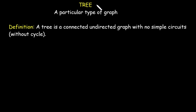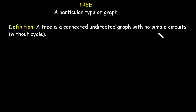In this video we are going to learn about trees. A tree is a special type of graph — specifically, it is an undirected connected graph with no simple circuit. A simple circuit is a path that starts and ends at the same vertex without repeating any edge. So if a graph contains any simple circuit, then it is not a tree. In other words, a tree is a connected undirected graph with no cycle.